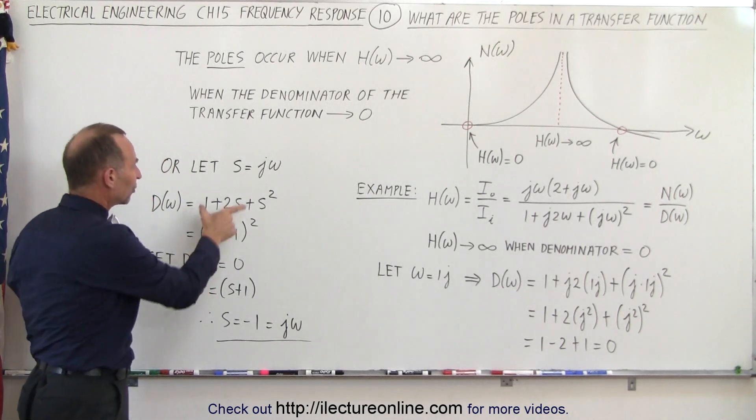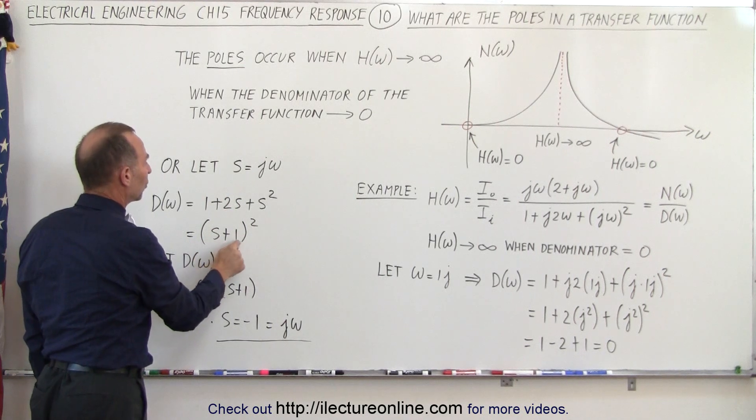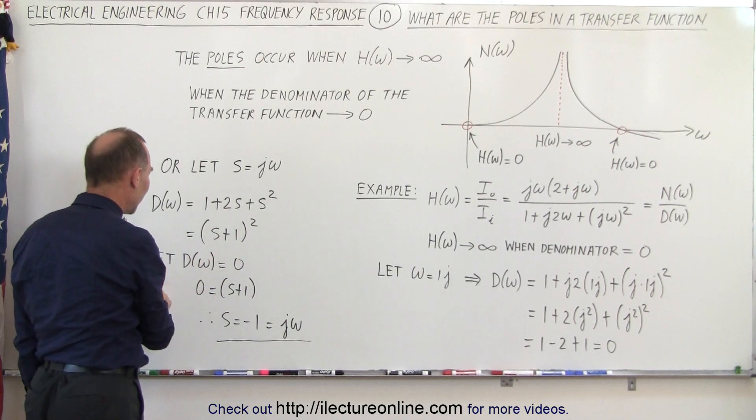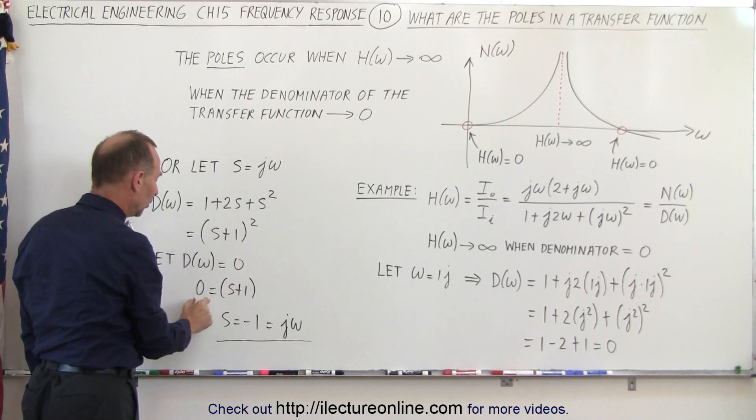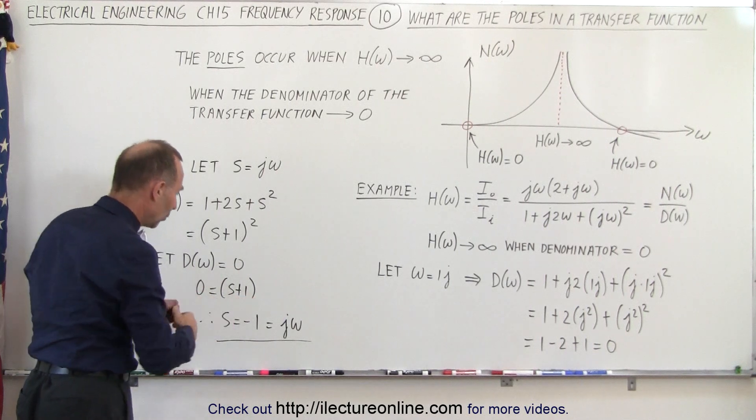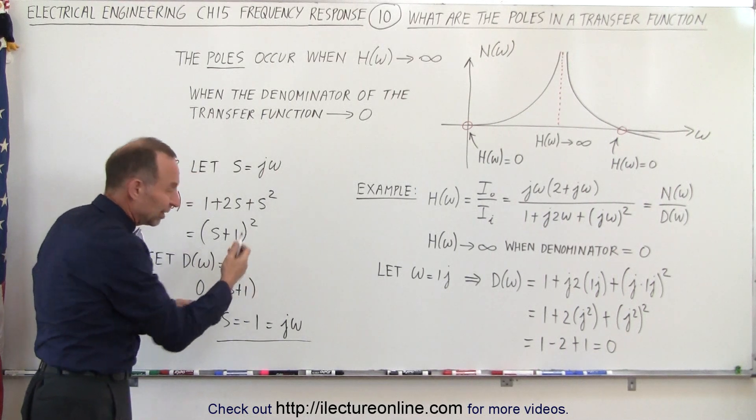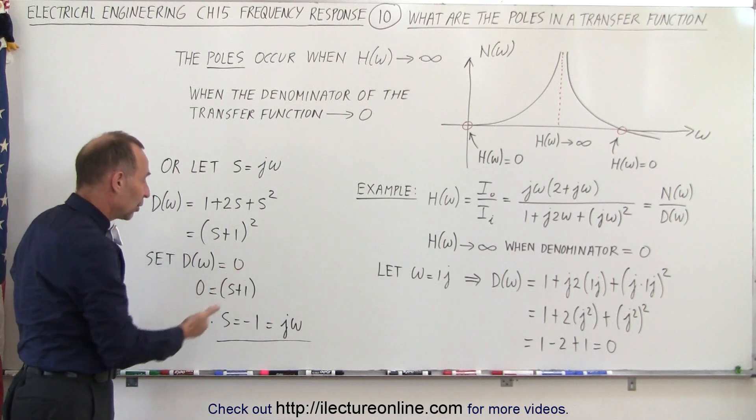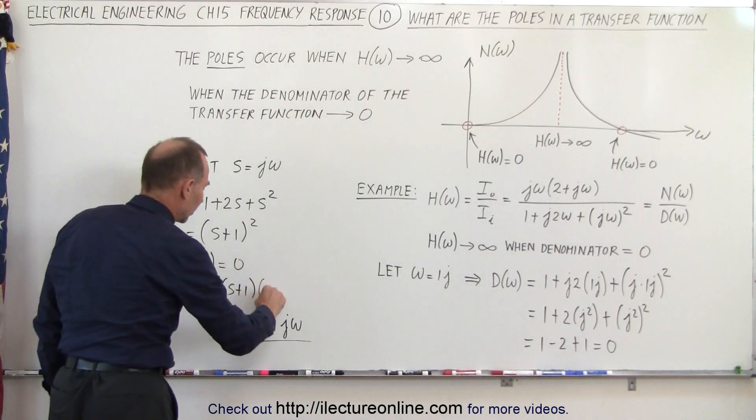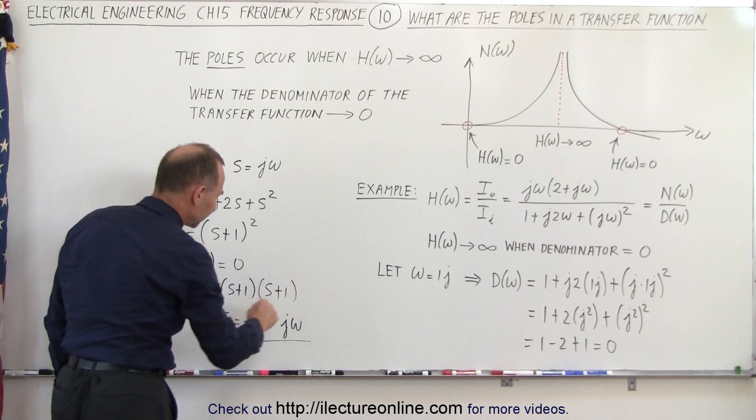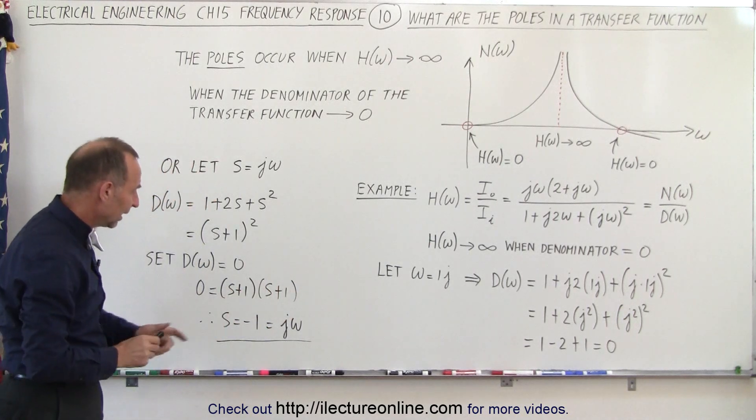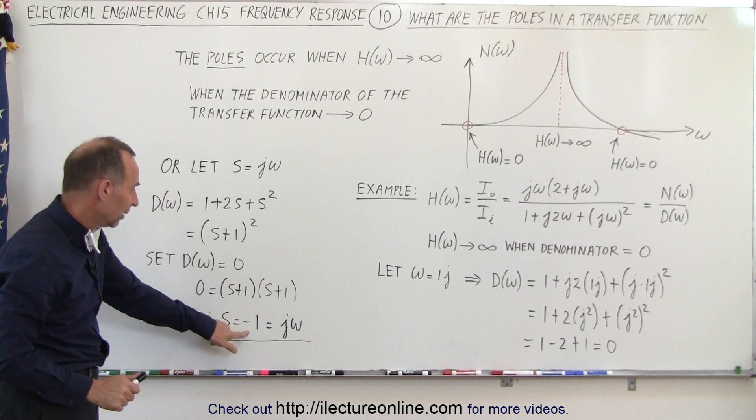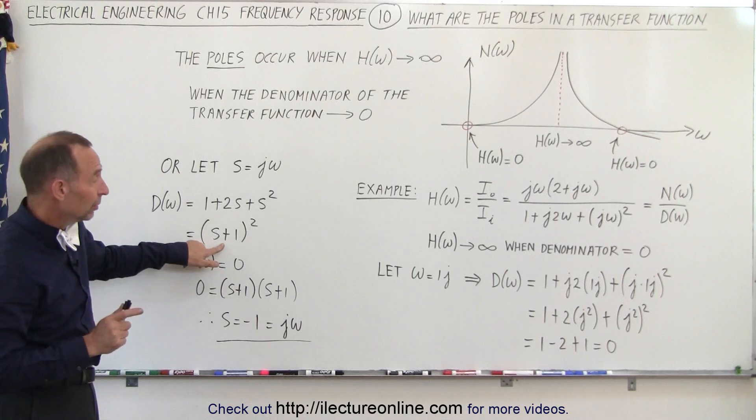If we then factor the quadratic equation, we end up with (s + 1) squared. And if we now set the denominator equal to 0, or 0 equals (s + 1) squared, but I don't need to square it. That means then, of course, because we have what we call a double pole, or basically we can go ahead and write it like this. Then you can see that if s is equal to negative 1, this will be equal to 0, which means we'll have a zero denominator, which means we'll have an infinite value for the transfer function. And that will then occur when s equals negative 1.